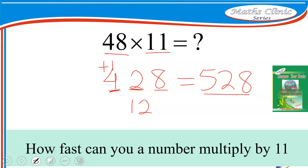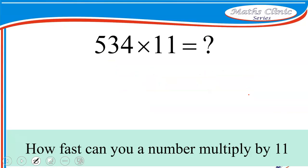This can be done with a three-digit number. The same thing, we start with 5, we end with 4. Then we start adding from backwards. So we add 4 to 3, and that gives us 7. And 3 and 5 will give us 8. And so the answer for 534 times 11 is 5,874.